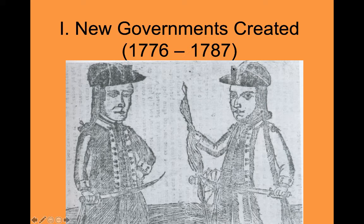Welcome back to our lecture on U.S. history. Today we're going to be looking at new governments that are created in the United States from 1776 to 1787. This will be composed mostly of state governments created at the start of the revolution and the national government, the Articles of Confederation. On this slide is a political cartoon of Shay's Rebellion, which we'll discuss as we go through.